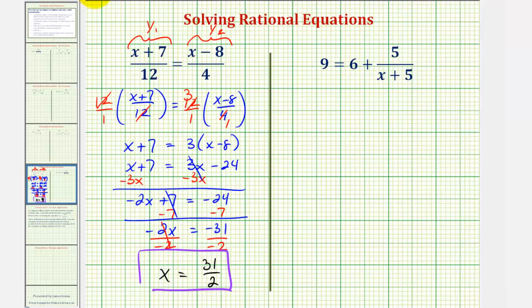Looking at our second rational equation, notice how x cannot equal negative 5, because if it does, we'd have division by 0, which is undefined. So if we get a solution of x equals negative 5, we would have to exclude that value. Now before we clear the fractions though, notice how we have a 9 on the left and a 6 on the right. Let's go ahead and subtract 6 on both sides to simplify this equation.